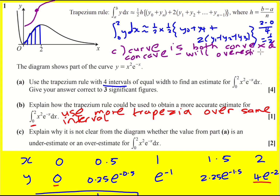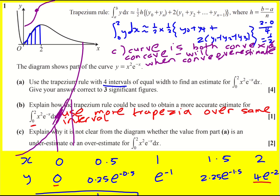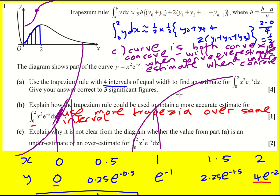We overestimate when the curve is convex — that always happens when the gradient is increasing, you get this extra little bit. And we underestimate when it's concave — you end up missing out a little bit. So overall we don't know what's going to happen — we cannot tell. Whereas if integrating only between zero and one we'd know it's an overestimate, or between one and two an underestimate. Therefore we cannot tell overall.